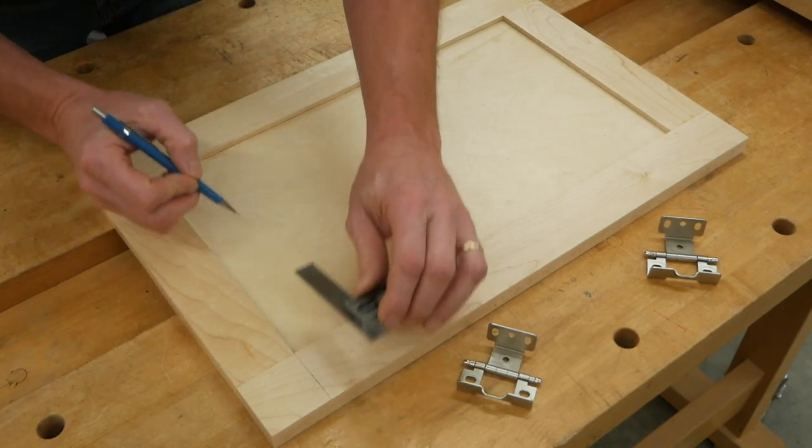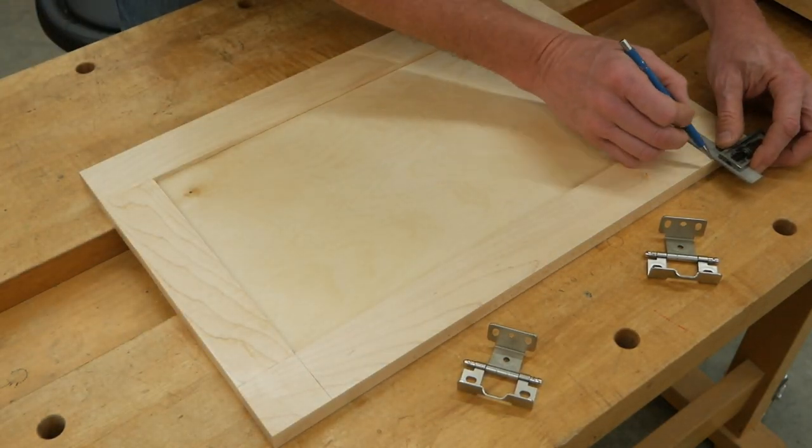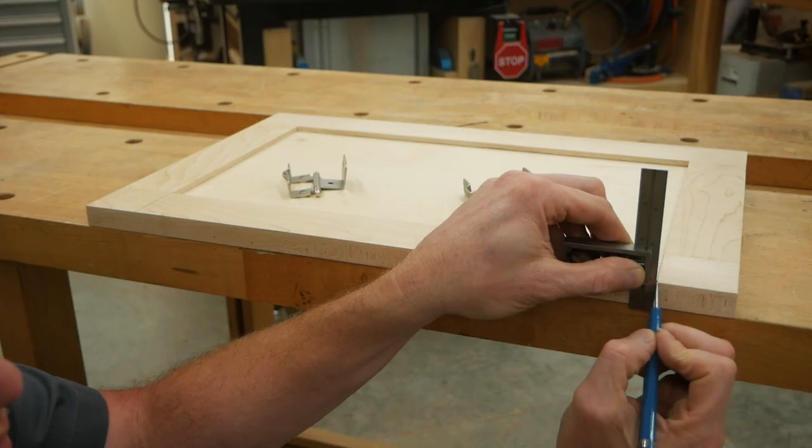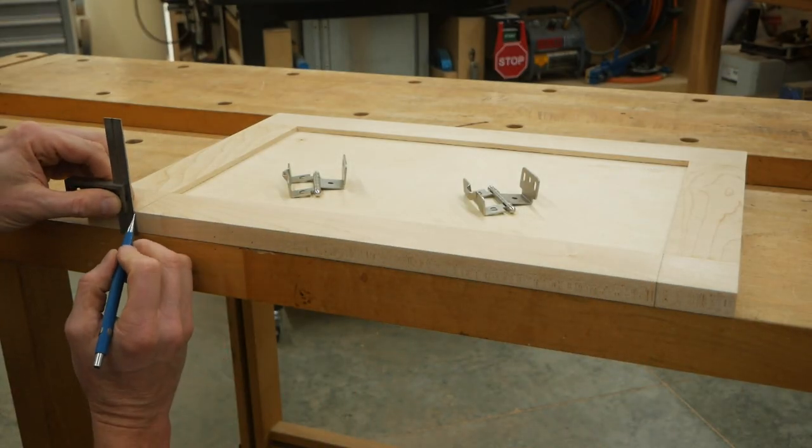We'll mount the hinges to the cabinet door first. To do that, mark two layout lines across the door stiles on the back face that line up with the inside edges of the rails. Extend these lines around to the edge of the door, too.